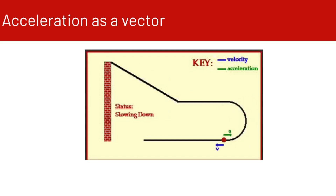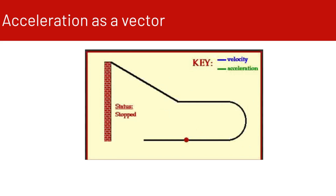Now it's made it around the curve and is back on the straightaway, and the marble is slowing down again. The acceleration vector is pointing in the opposite direction as the velocity vector, and the velocity vector is getting shorter and shorter until finally the marble has stopped and there is no velocity vector or acceleration vector.